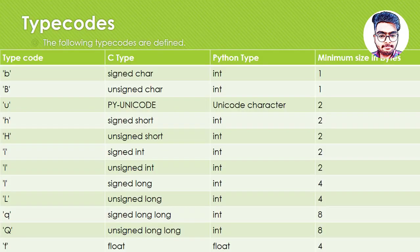Let's get started. The type code — if you can recall in lesson number 26, we created an array which was of integer type and there we mentioned the type code as small i, which is assigned int — Python type int, C type signed int. Similarly, we can create arrays of all these types. We can have a signed character using small b, for unsigned character we would use capital B, for py unicode we would use small u, and for signed short we would use small h.